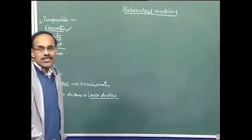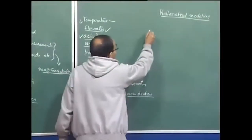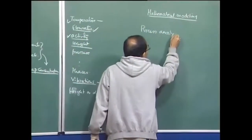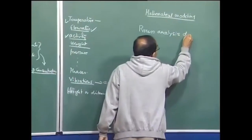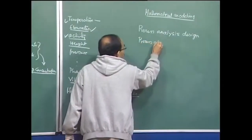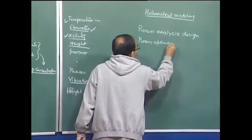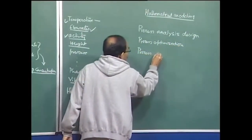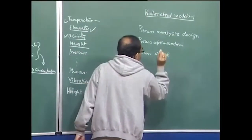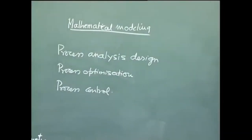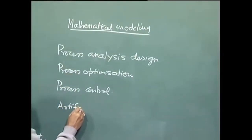What do the models do in steel making? There are various jobs: through models we can carry out process analysis and design, process optimization, process control, and we can interface with artificial intelligence.